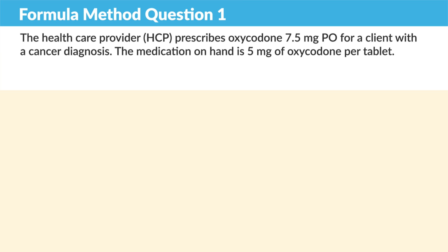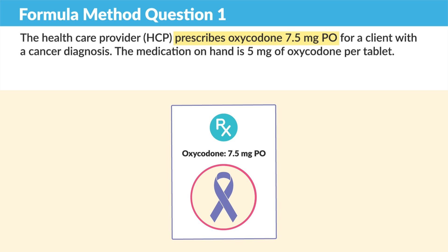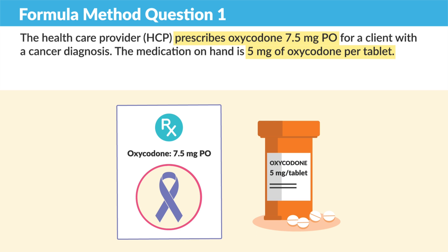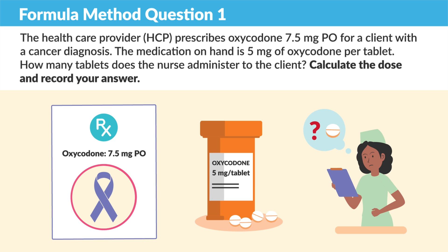Let's break down question one. The healthcare provider, HCP, prescribes oxycodone 7.5 milligrams PO for a client with a cancer diagnosis. The medication on hand is 5 milligrams per tablet. How many tablets does a nurse administer to the client? Calculate the dose and record your answer.